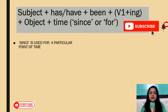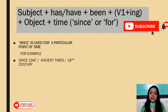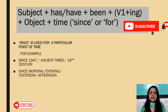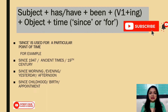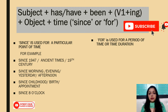'Since' is used for a particular point of time. For example: since 1947, since ancient times, since the 19th century, since morning, since evening, since yesterday, since afternoon, since childhood, since his birth, since the appointment was fixed, since 8 o'clock. All these are specific points in time, so we use 'since'.